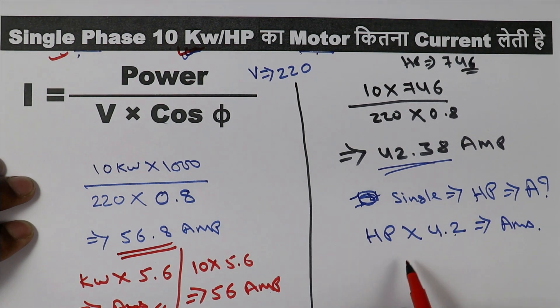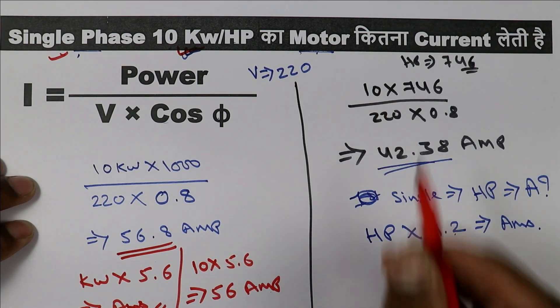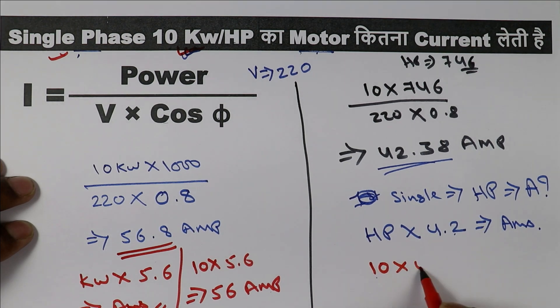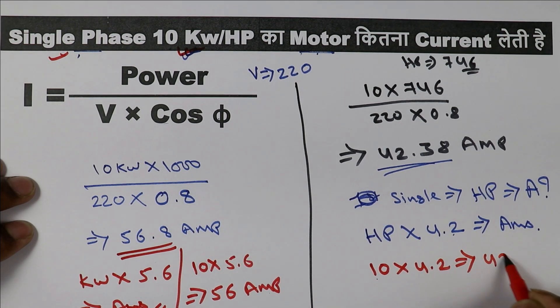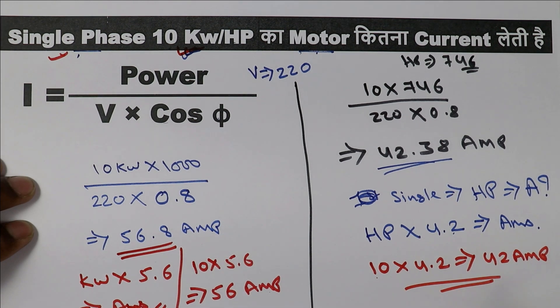For the short trick for a single-phase horsepower motor, simply multiply horsepower by 4.2. For a 10 HP motor, 10 multiplied by 4.2 gives 42 ampere. You can see here also we got almost the same answer as the exact calculation of 42.38 ampere.